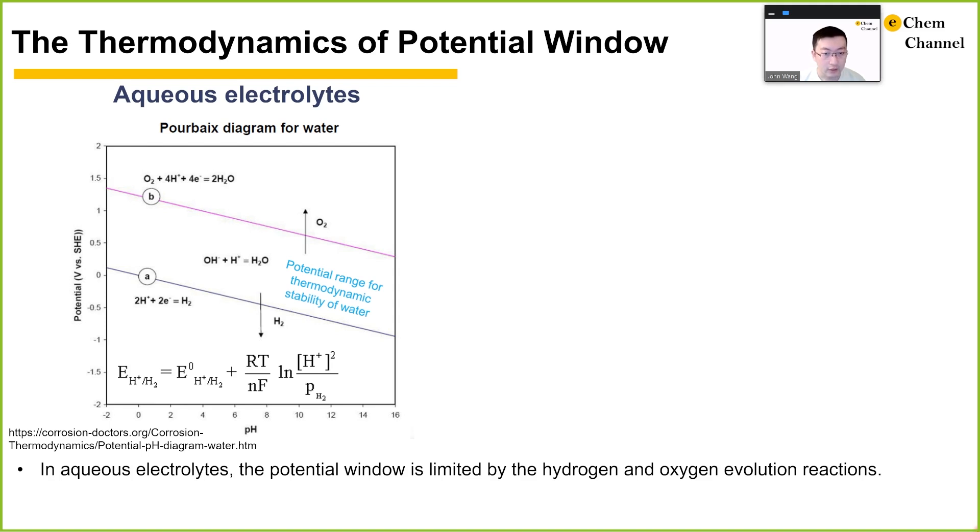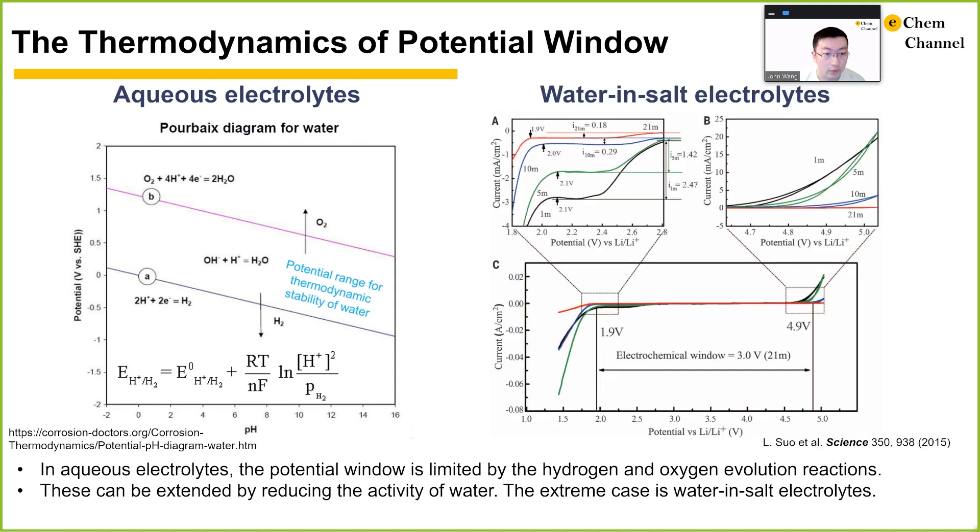However, what's not included in the equation is the activity of water, which plays a major role in the stability window. An extreme case is a water-in-salt electrolyte where the activity of water is so low that the potential window of this aqueous electrolyte can be extended to 3 volts and above, rivaling that of organic electrolytes.